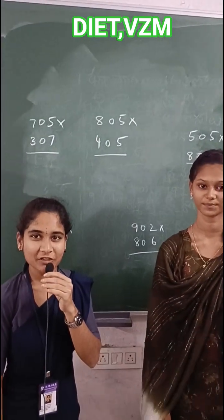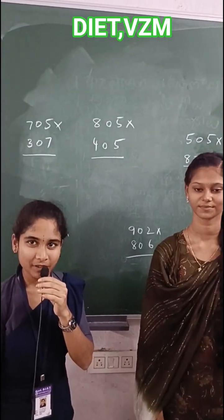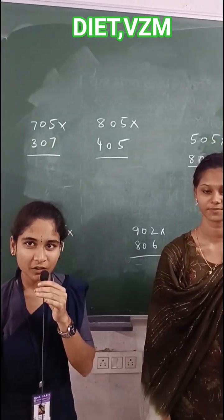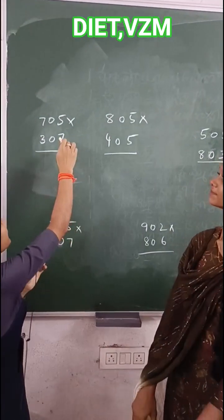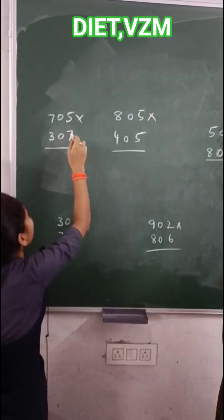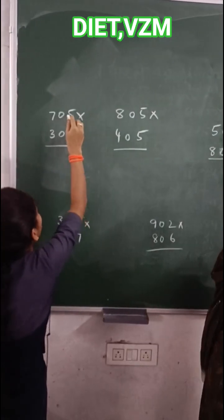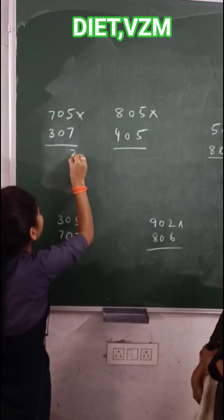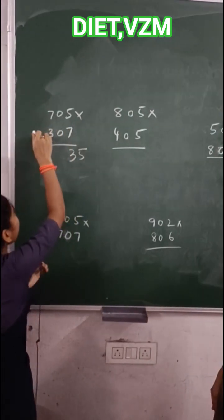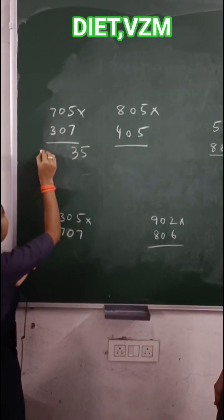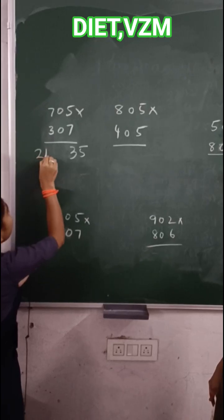Let us have a fun quick multiplication with 3 distinct numbers which has 0 in the middle. Now, product of these 2 numbers: 7×5 is 35. After these products, 7×3 is 21.